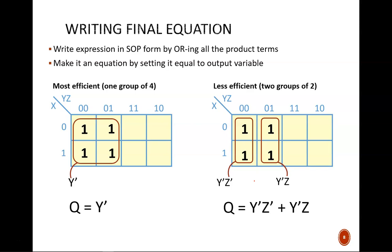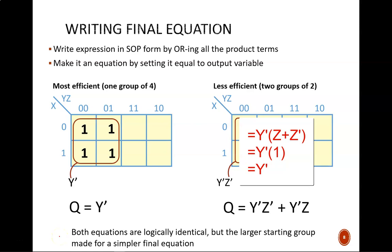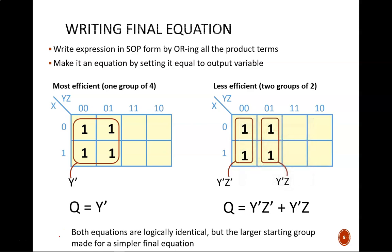Both of our K-maps produce logically identical equations. In fact, in this equation, we can algebraically factor out Y', then Z or Z' equals 1, and the result is Q equals Y'. But we obviously would prefer to jump straight to the simplest equation. We do that by making the largest possible groups of ones. The smaller the groups, the more specific the expression must be, which means more variables.